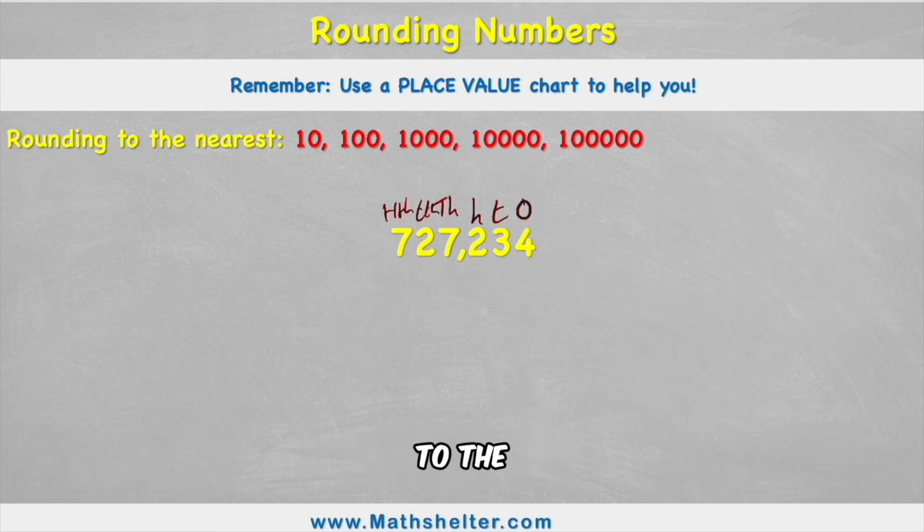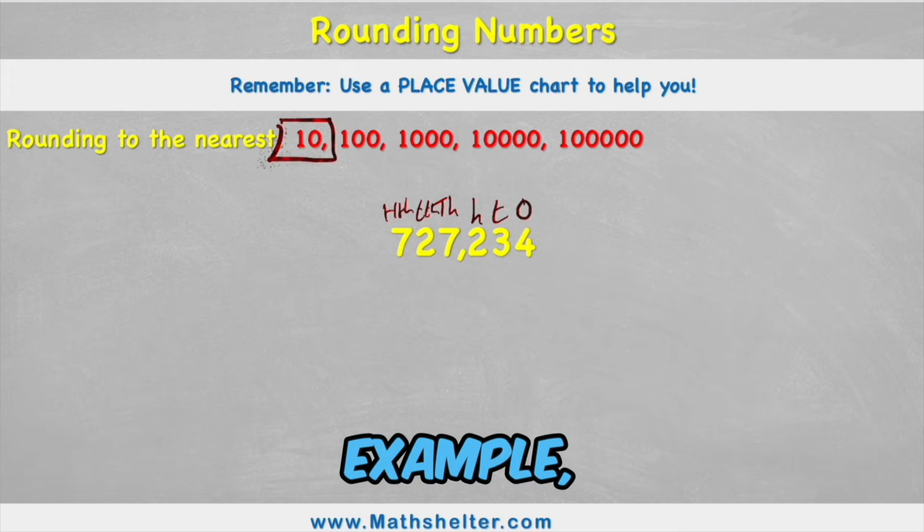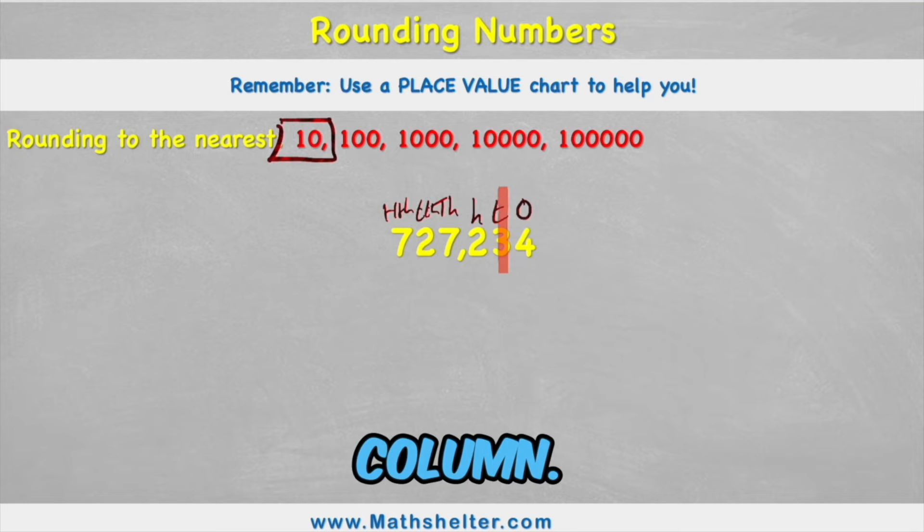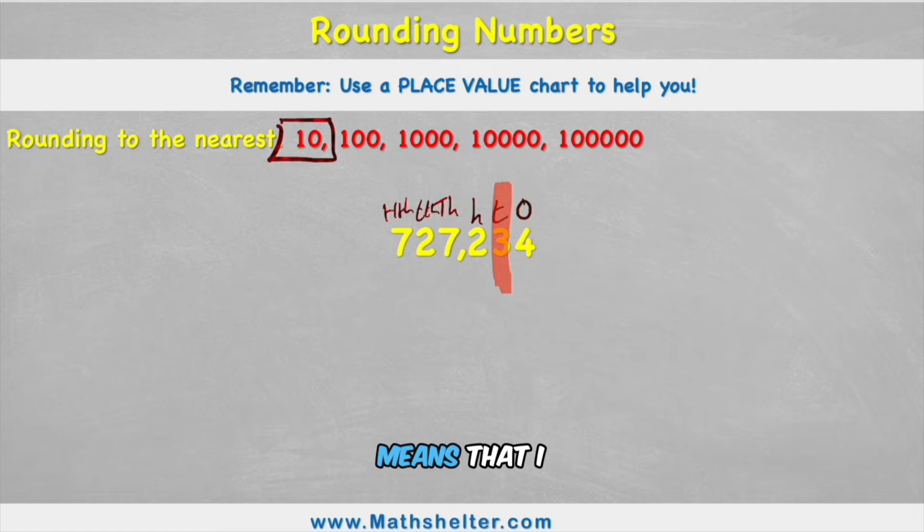So if we're trying to round this number to the nearest 10 for example I would have to look in the tens column and at the minute I have a 3 in this column. So rounding to this nearest number means that I shouldn't have to care about anything that comes after it. So this 4 we want to get rid of and we want to replace it with just a zero. But there's a rule because if this 4 was actually a 9 for example then it wouldn't be very fair to keep this 3 as a 3 because the 9 would mean that this is actually 39 which is very close to 40 and not to 30.